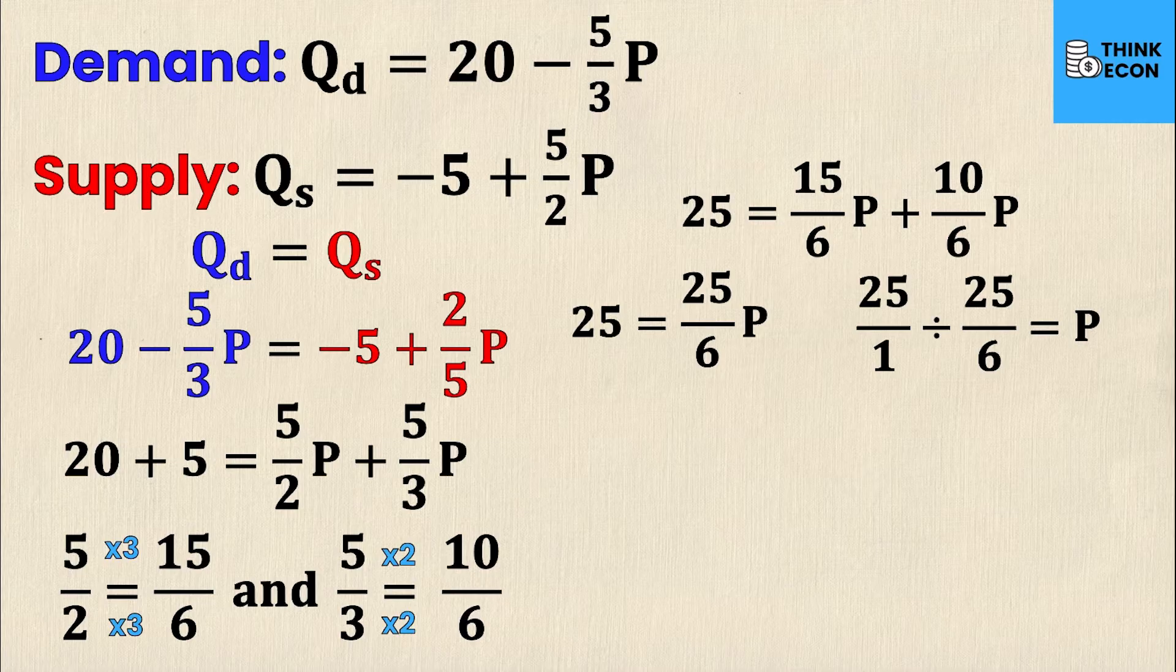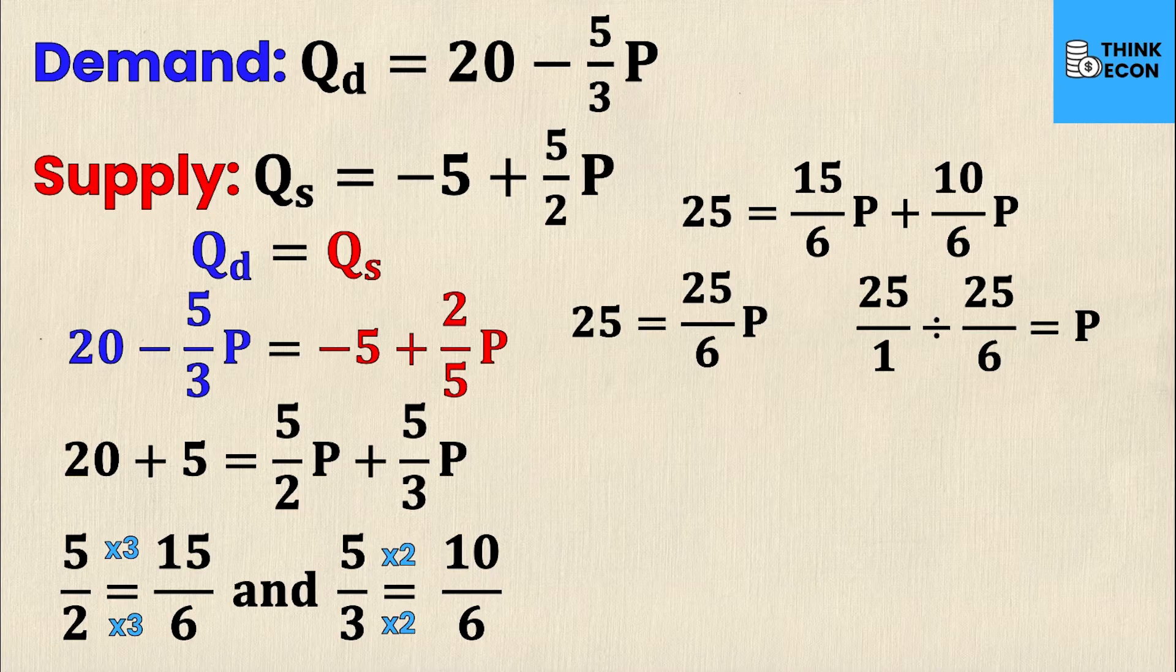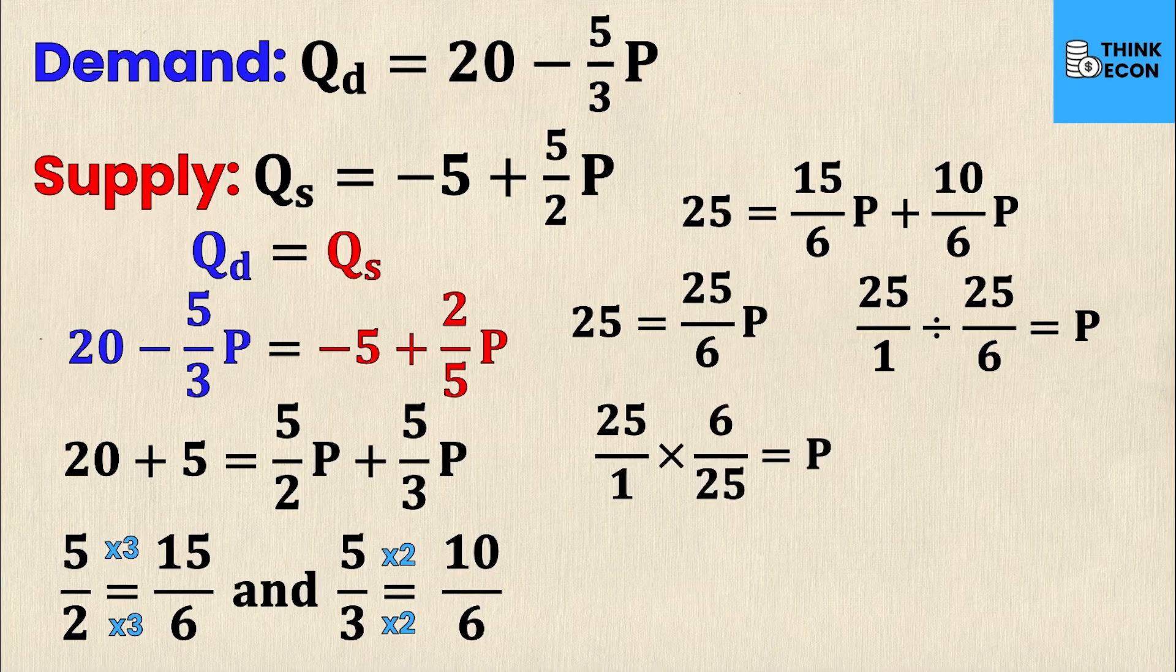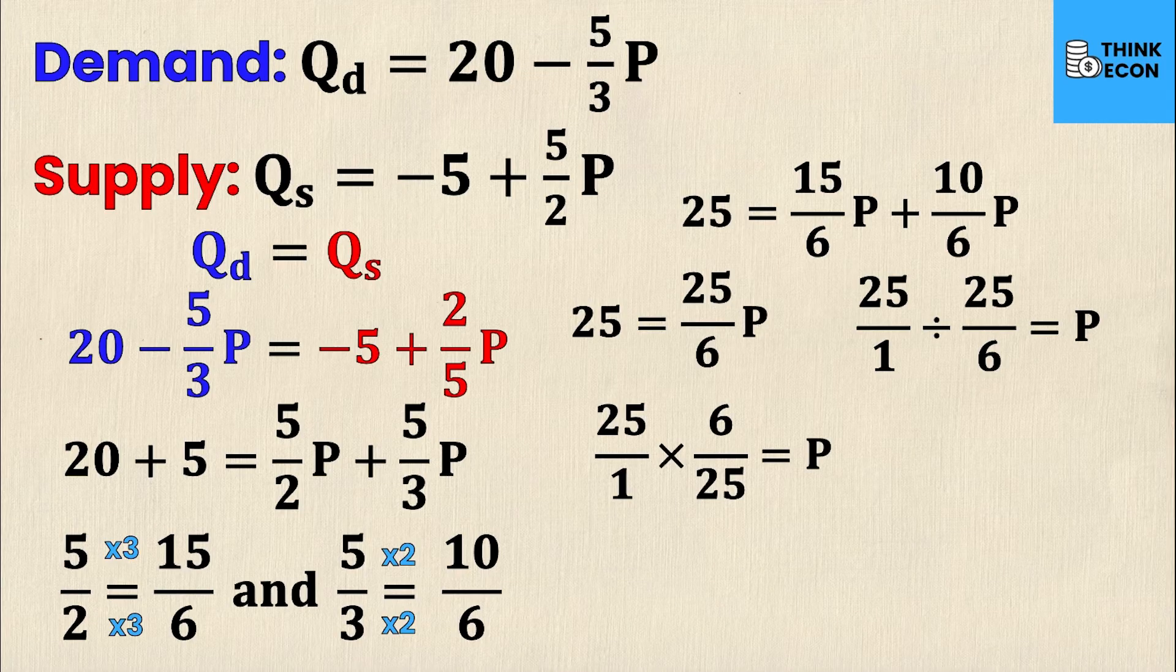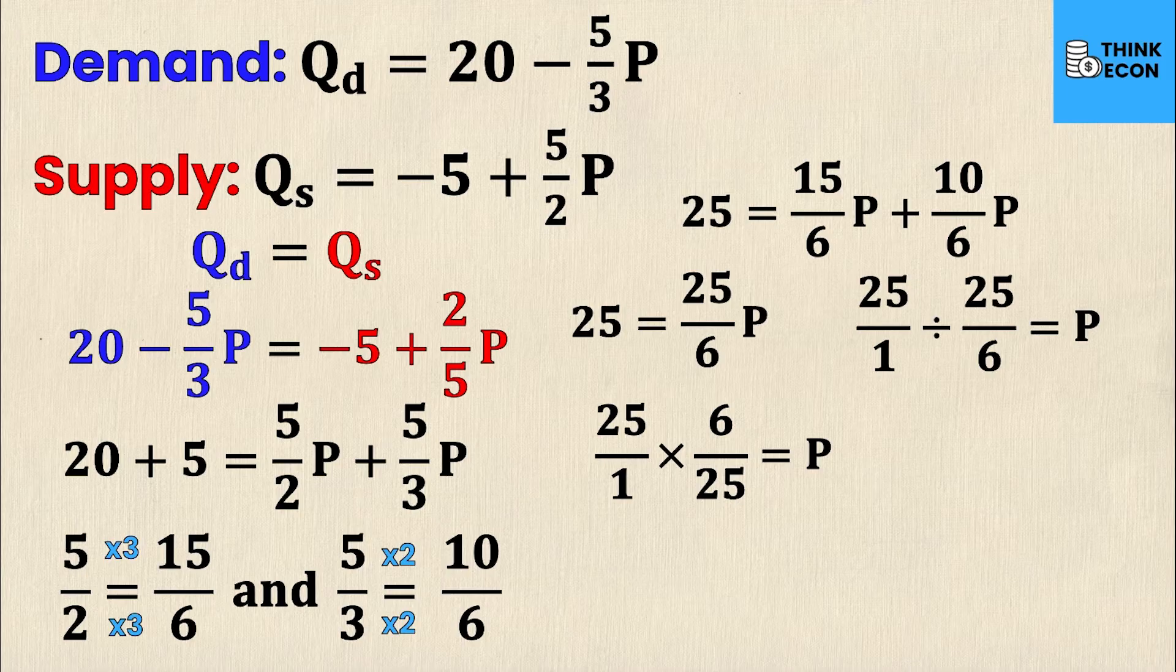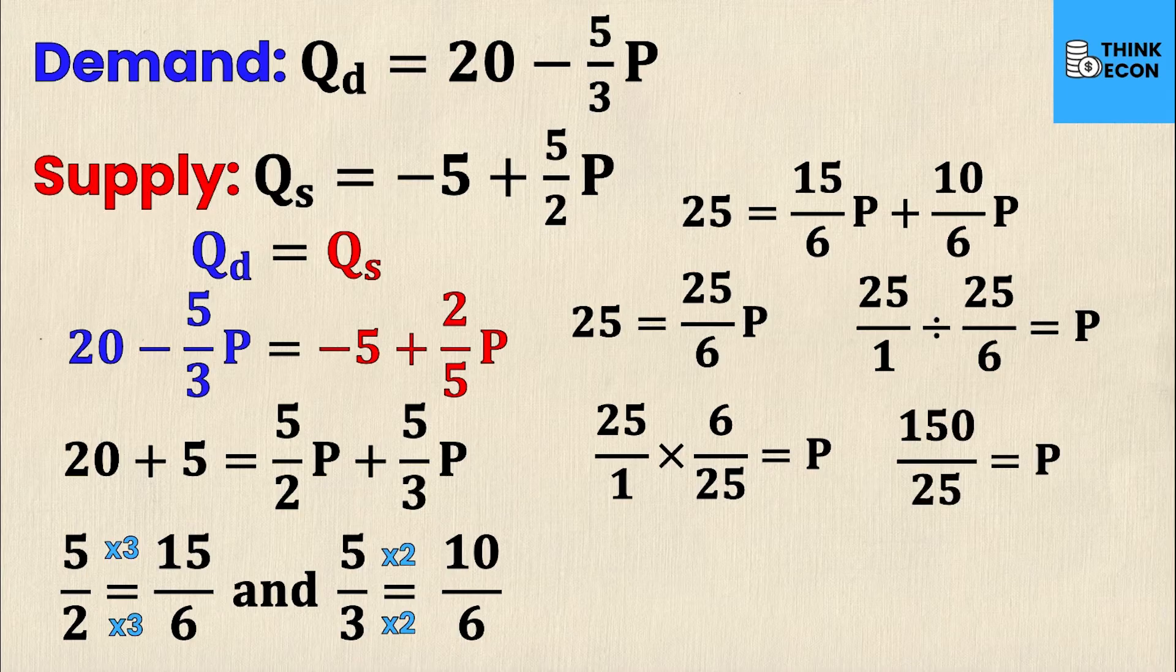I'll remind you how to divide fractions. 25 divided by 25 over 6 can be rewritten as a multiplication problem if I flip or write the reciprocal of the second fraction. So 25 over 1 divided by 25 over 6 can be rewritten as 25 over 1 times 6 over 25. Now it's easy because for multiplication, I just multiply numerator times numerator and denominator times denominator. This yields 25 times 6 is 150, and 1 times 25 is 25.